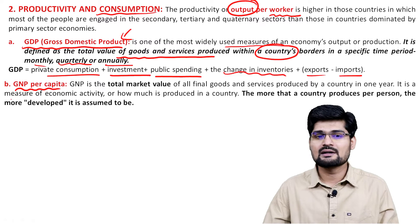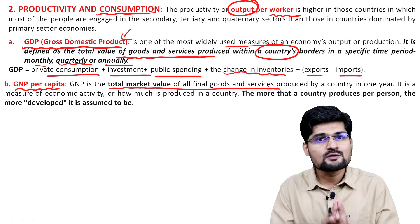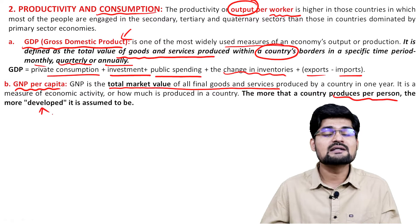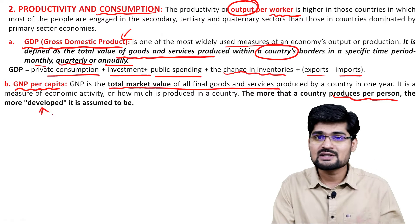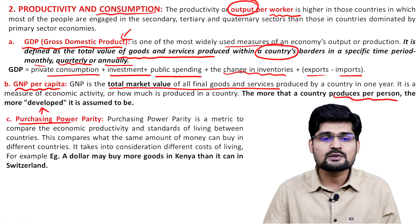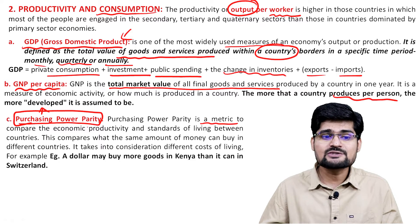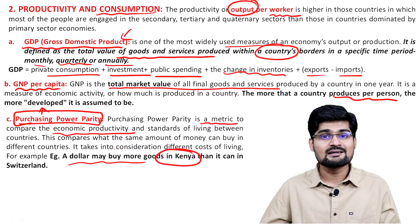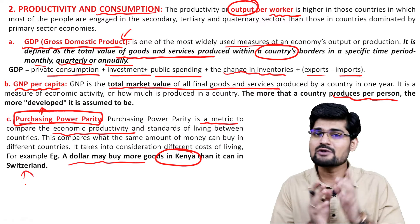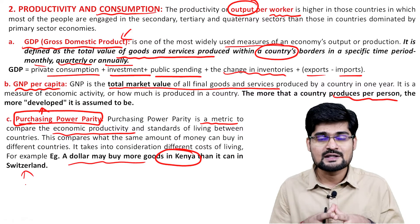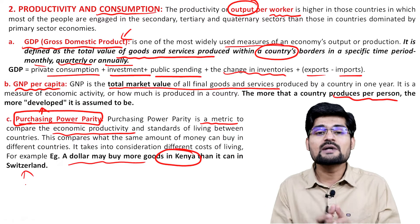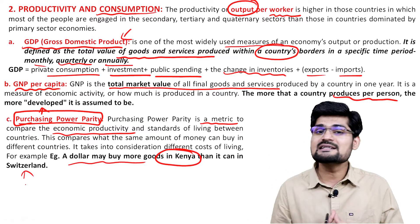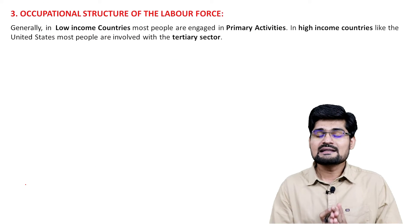GNP per capita is the total market value of all final goods and services produced by a country in one year. The more a country produces per person, the more developed it is assumed to be. PPP, Purchasing Power Parity, is a metric to compare economic productivity and standards of living. For example, a dollar may buy more goods in Kenya than in Switzerland — so purchasing power reveals a lot about a country's economic development level.